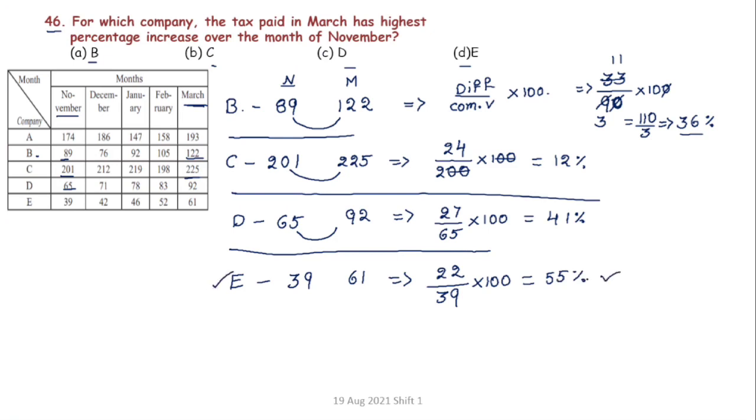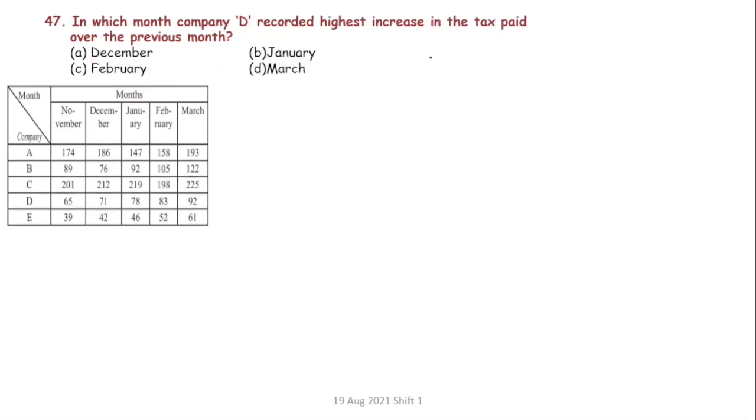Among the four companies, Company E has the highest percentage increase at 55 percent. So our answer is option D.